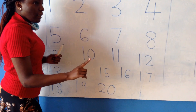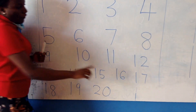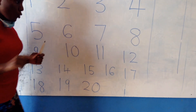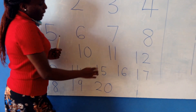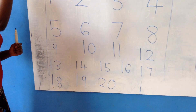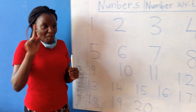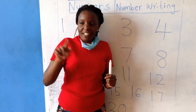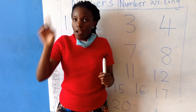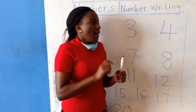Number eleven is a stick and a stick — that is number eleven. Number twelve: one and two. Now, from number eleven up to number twenty, write those numbers in the air: eleven, twelve, thirteen, fourteen, fifteen, sixteen, seventeen, eighteen, nineteen, twenty.